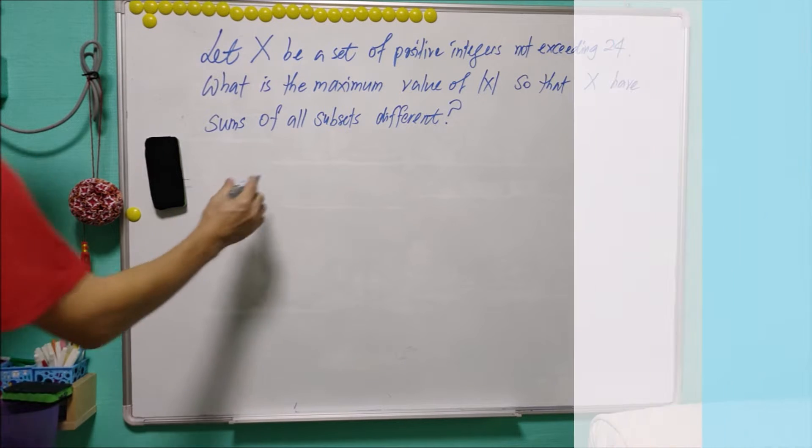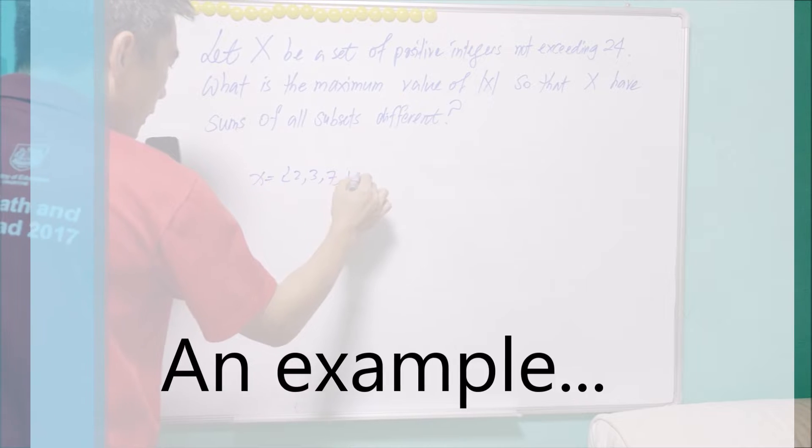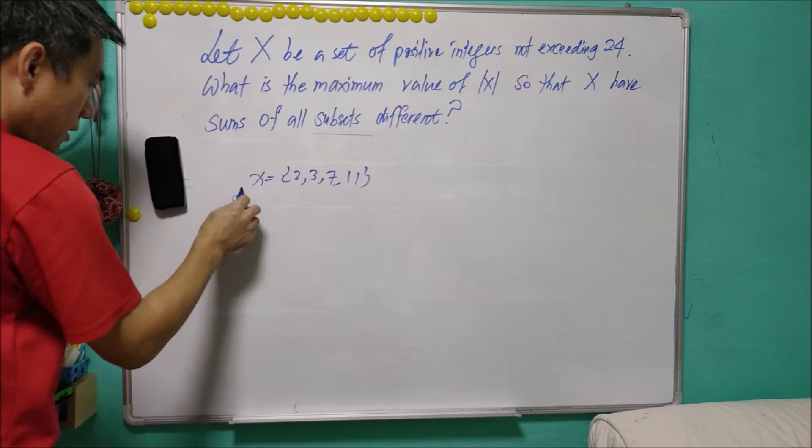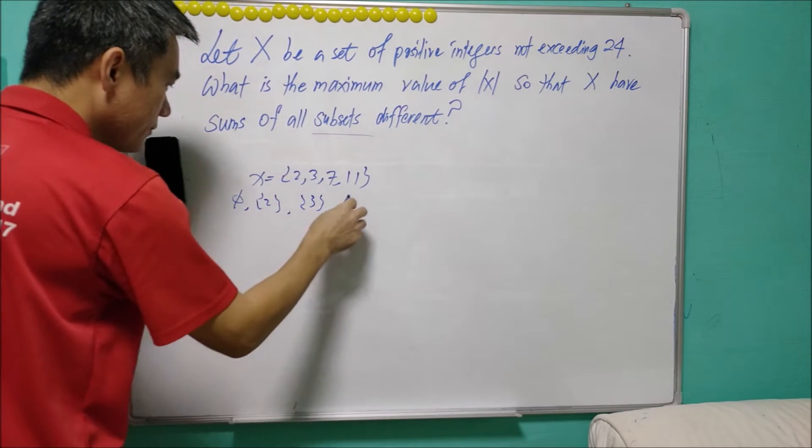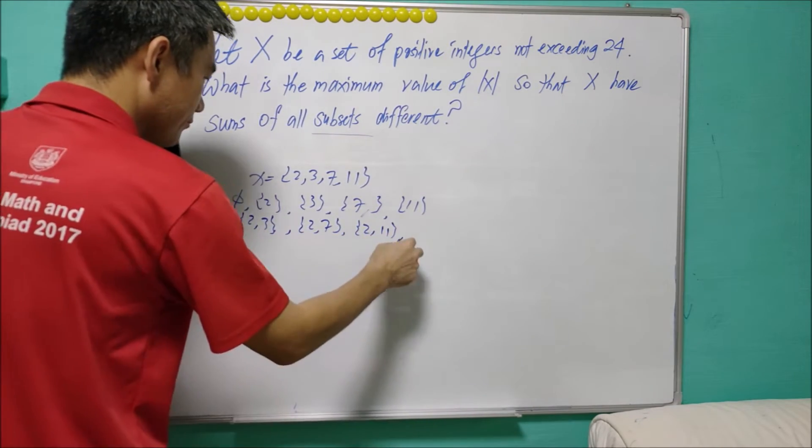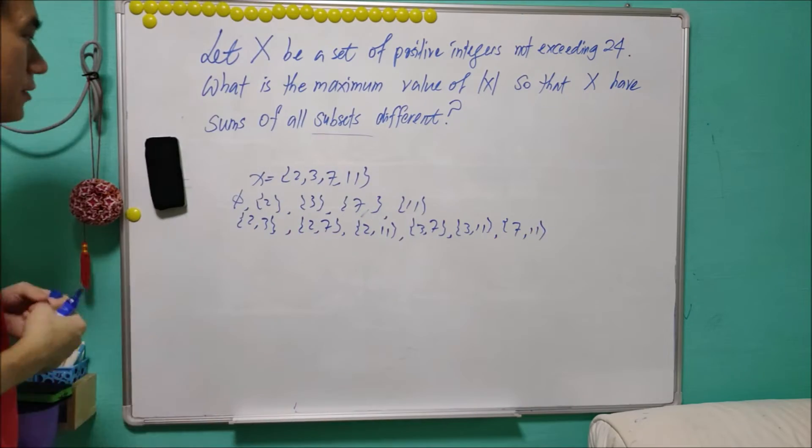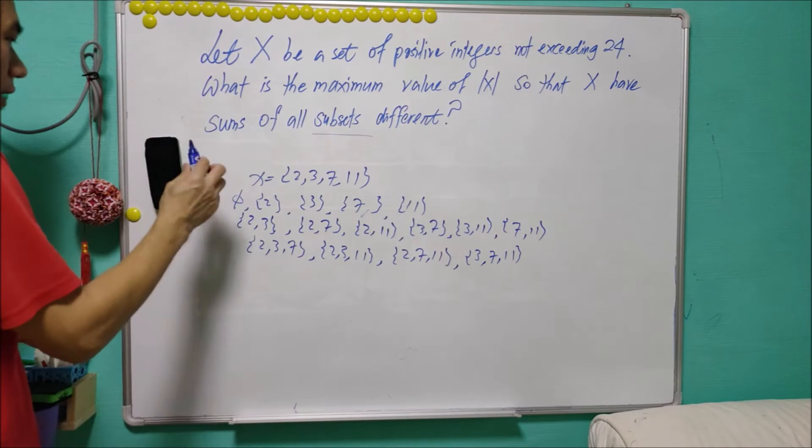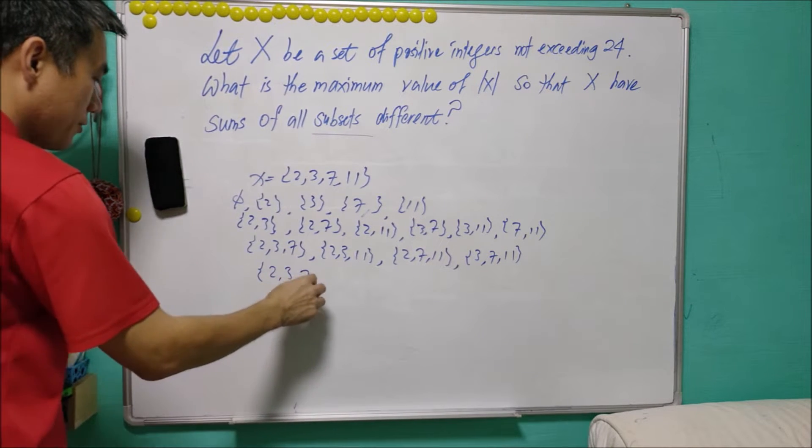What does it mean? Suppose X is equal to {2, 3, 7, 11}. All possible subsets of X are empty set, {2}, {3}, and so on, up to X itself which is a subset of itself.